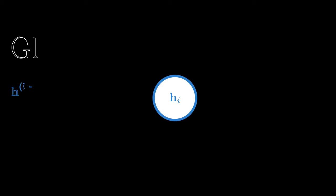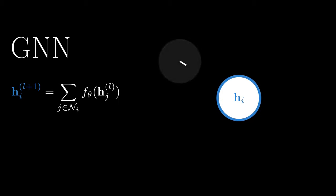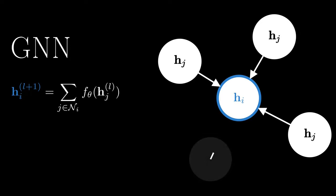Given a node i, each layer of a graph neural network updates this node's embedding by passing messages from its neighbors and aggregating them.